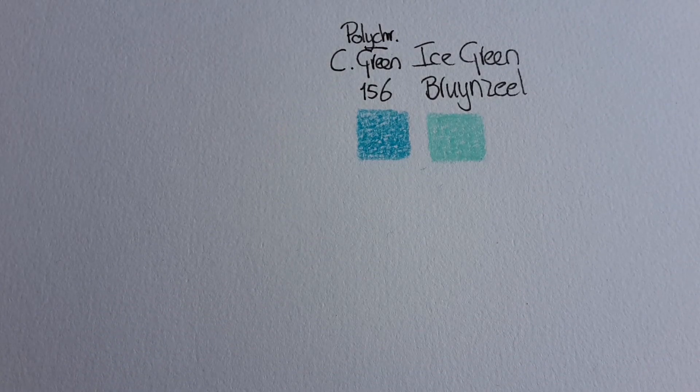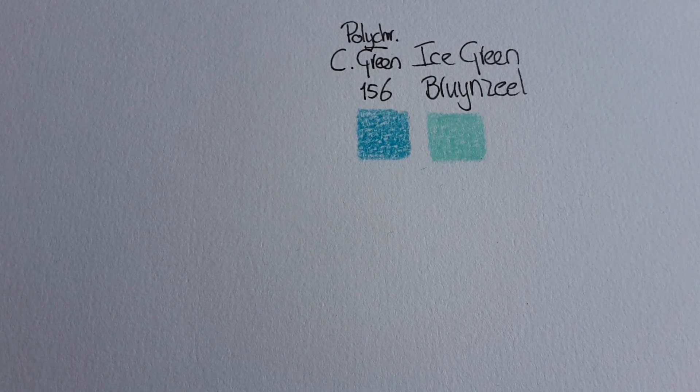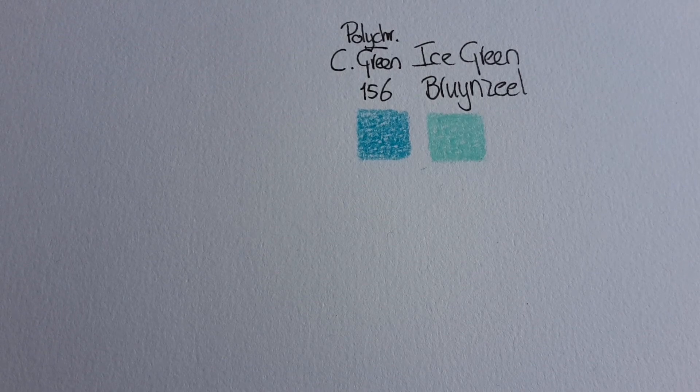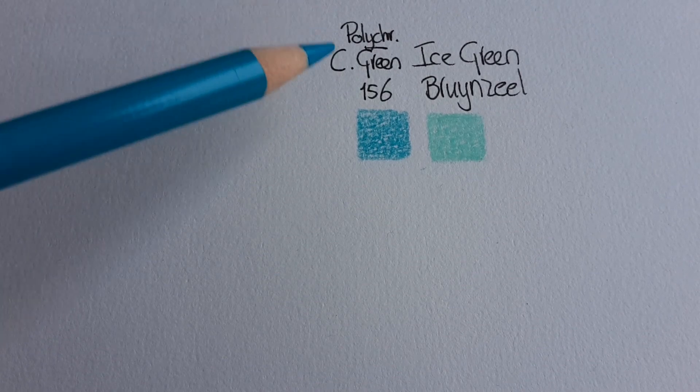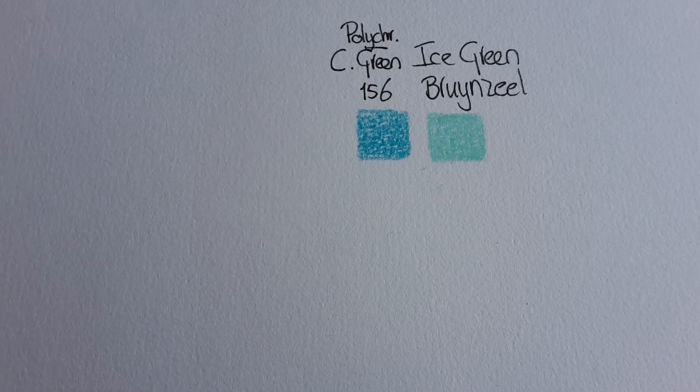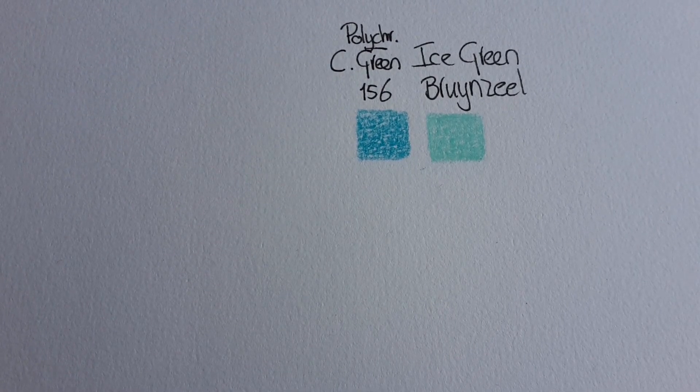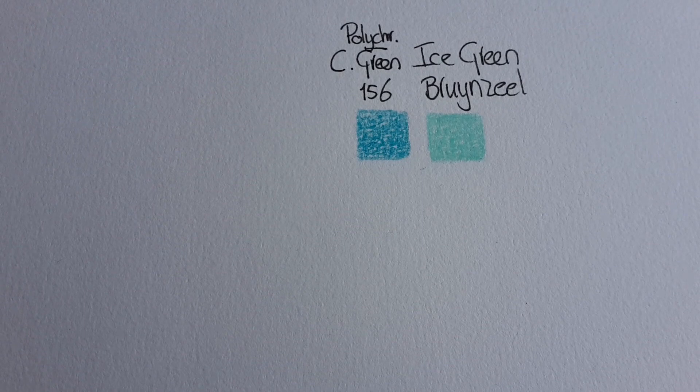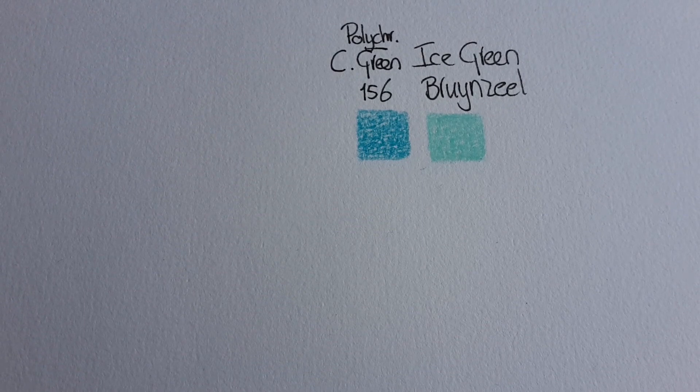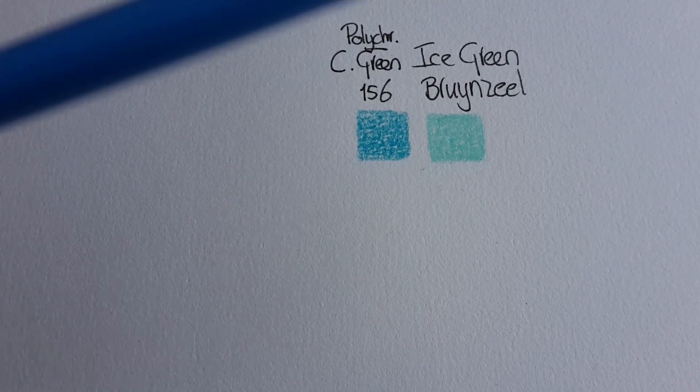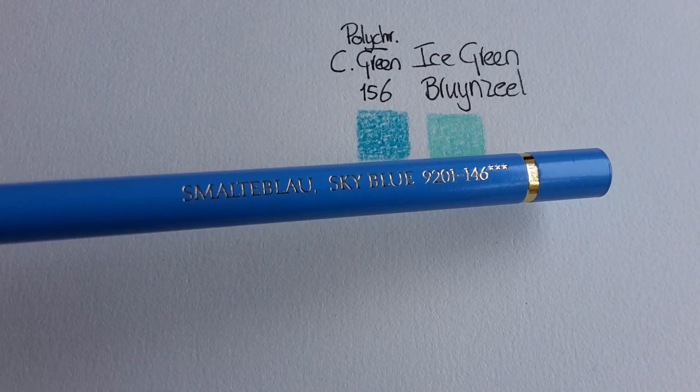Let's place that name here and the number, it is 156 cobalt green Polychromos. So now we are looking for a color combination that is lighter than this one. Let's see if we can find anything. First I will try the lightest blue that I have, that is sky blue.